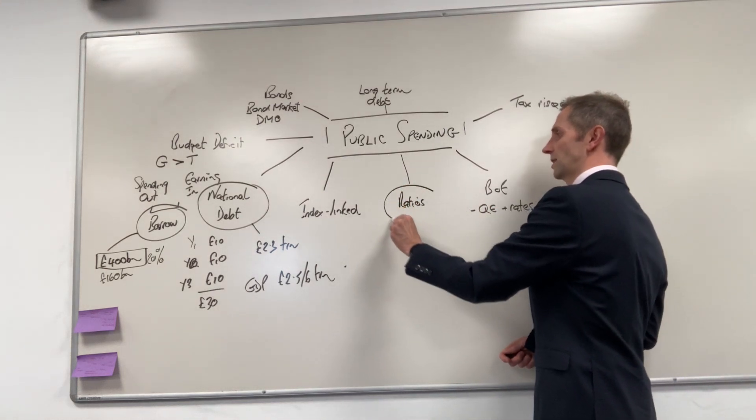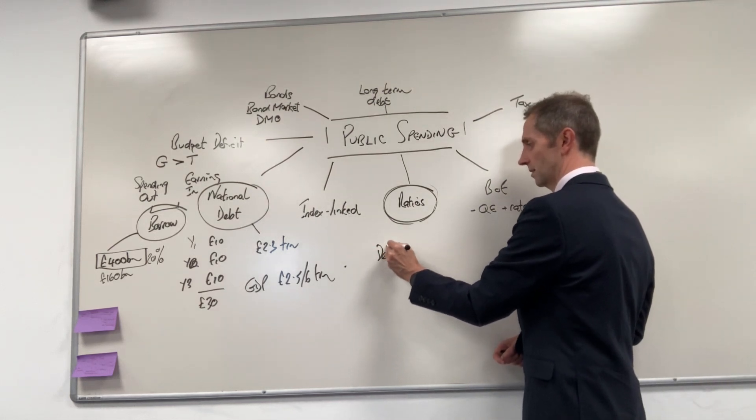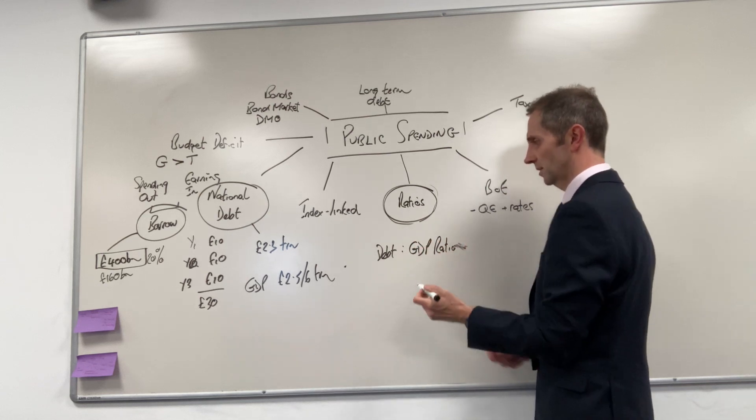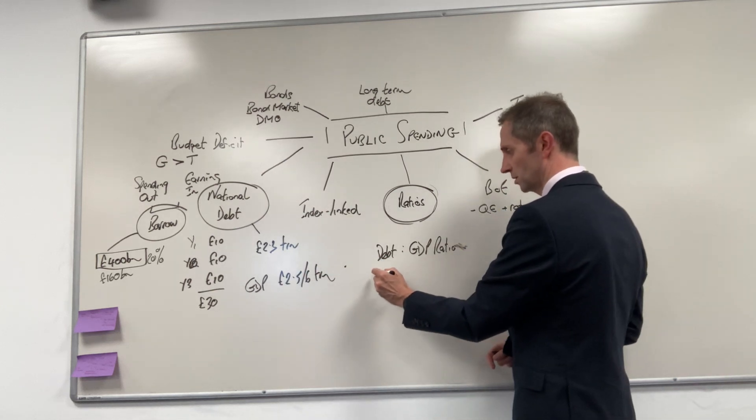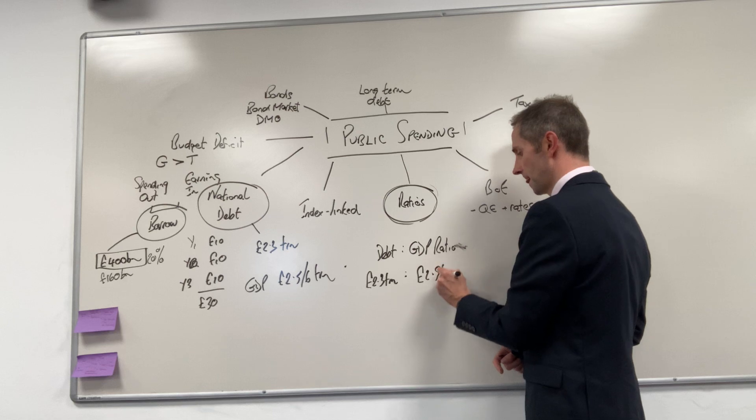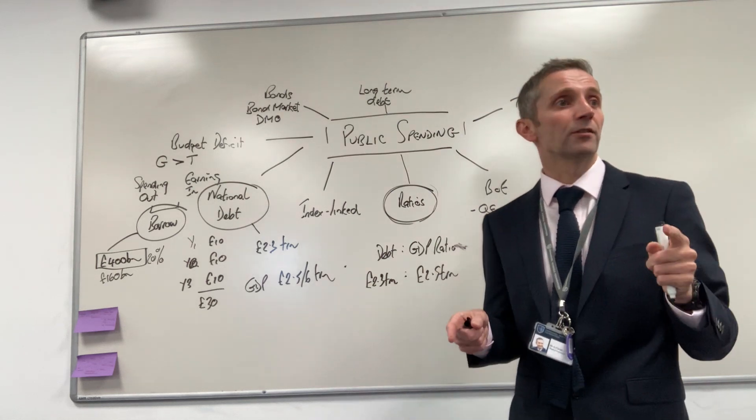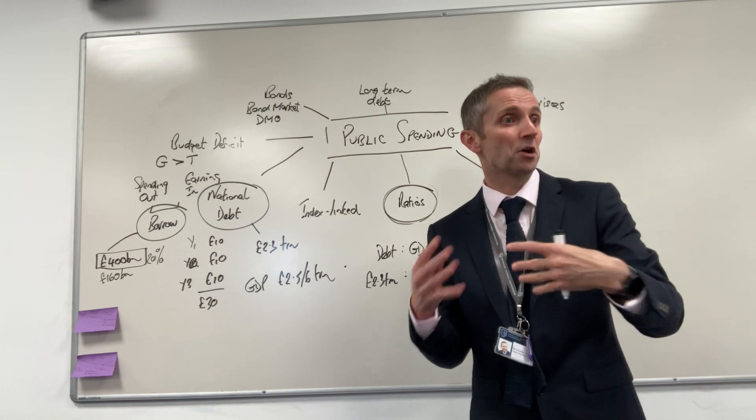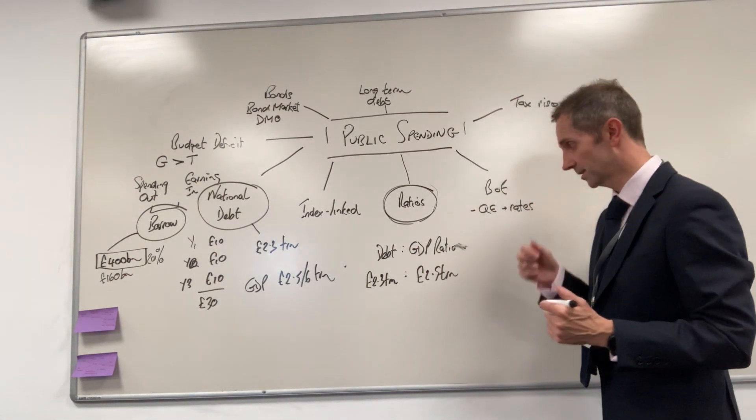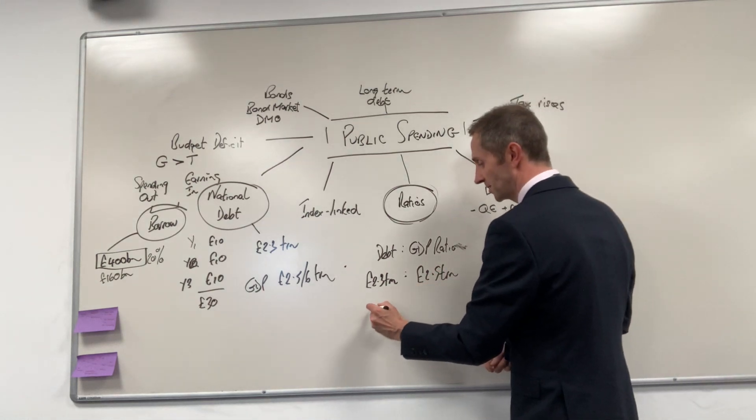Our GDP, the value of everything we're producing in goods and services in a year, is around 2.5 to 2.6 trillion. We've got a debt to GDP ratio. If our debt is about 2.3 trillion and our GDP is about two and a half trillion, most of the press will tell you that our debt to GDP ratio is almost approaching 100 percent. We almost owe as much as we can earn in a year. Where does one start with that?